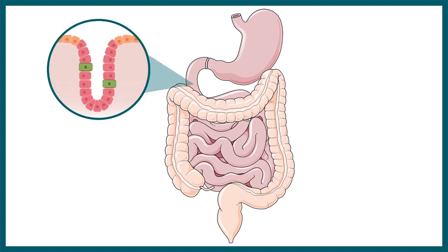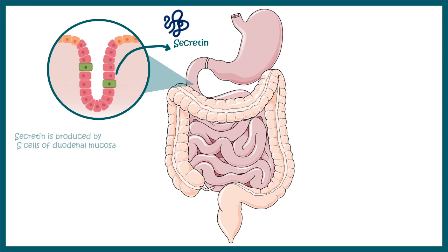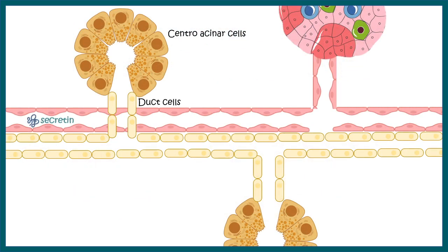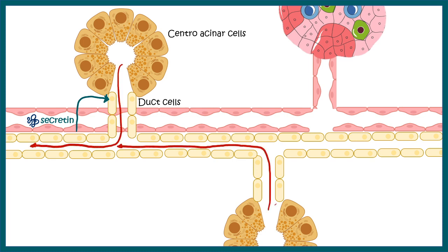Secretin is ultimately secreted by the S cells of the duodenal mucosa. To understand how secretin regulates pancreatic secretion: secretin acts on the duct cells, in contrast to cholecystokinin which works mainly on the centroacinar cells. Secretin acts on the duct cells and leads to the release of sodium bicarbonate, making the pancreatic secretion more alkaline.